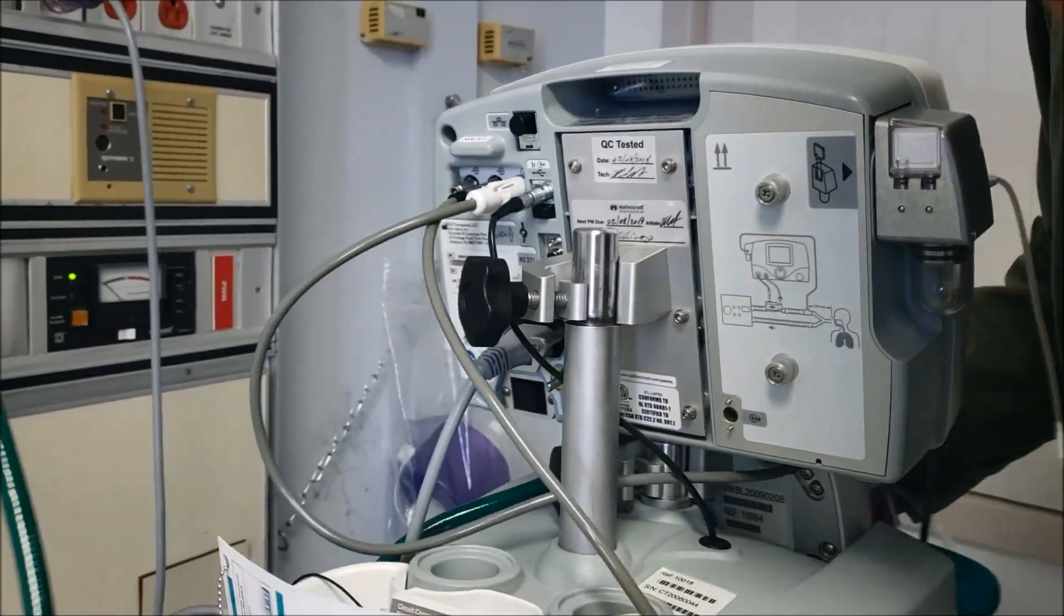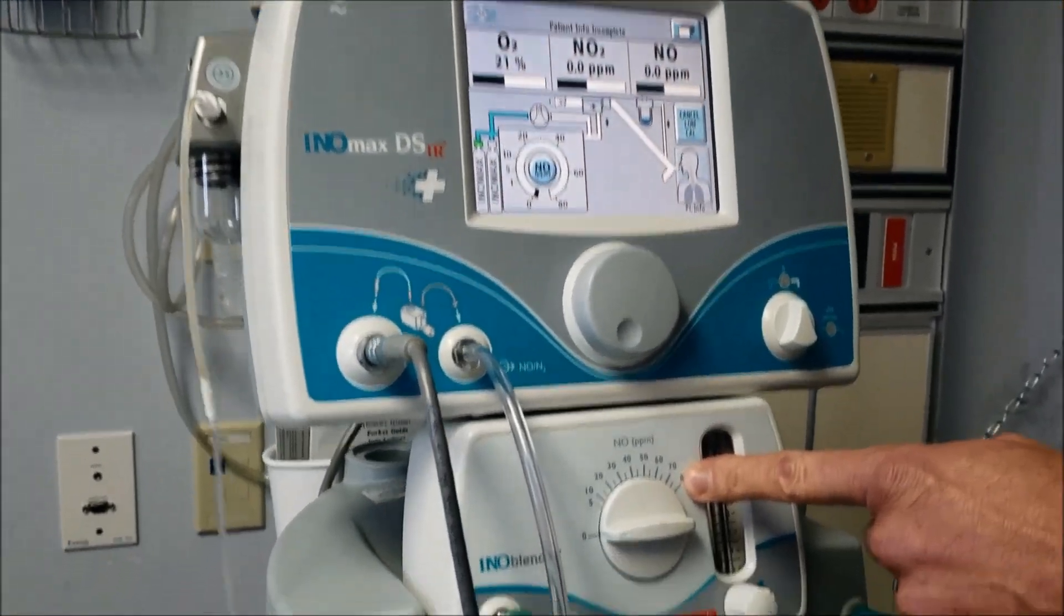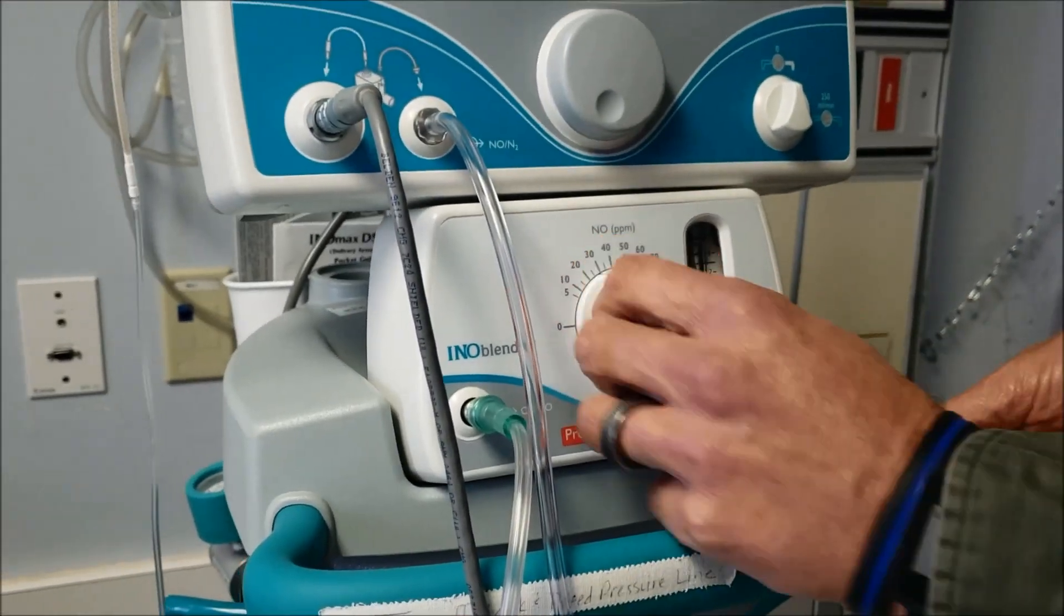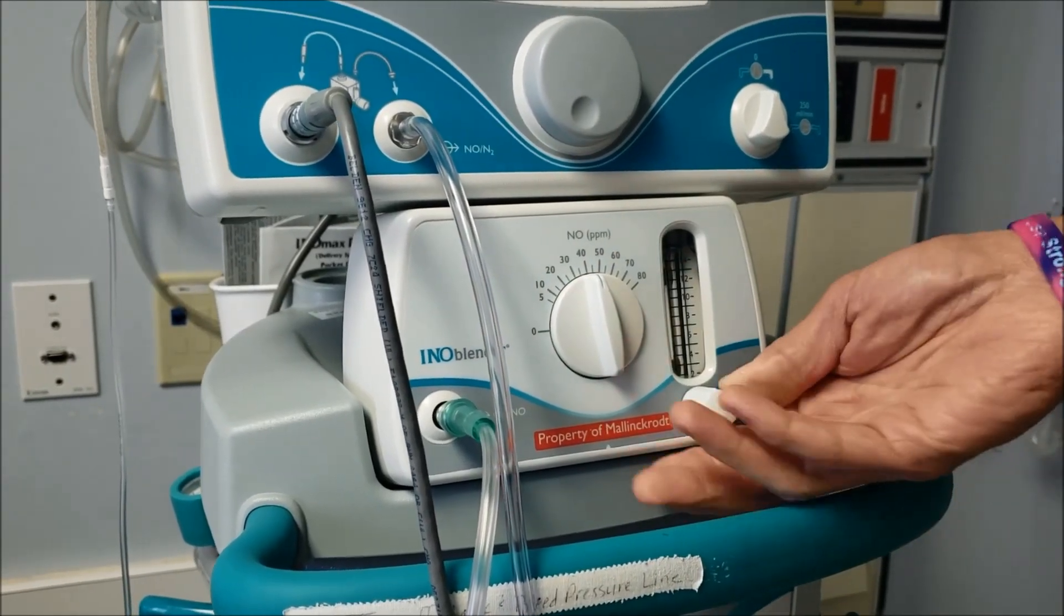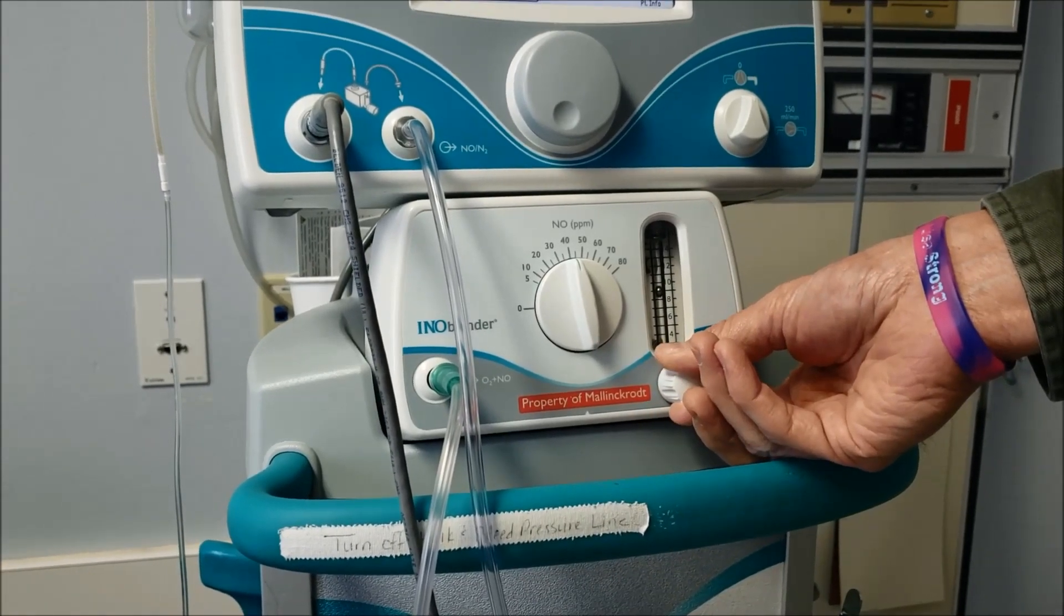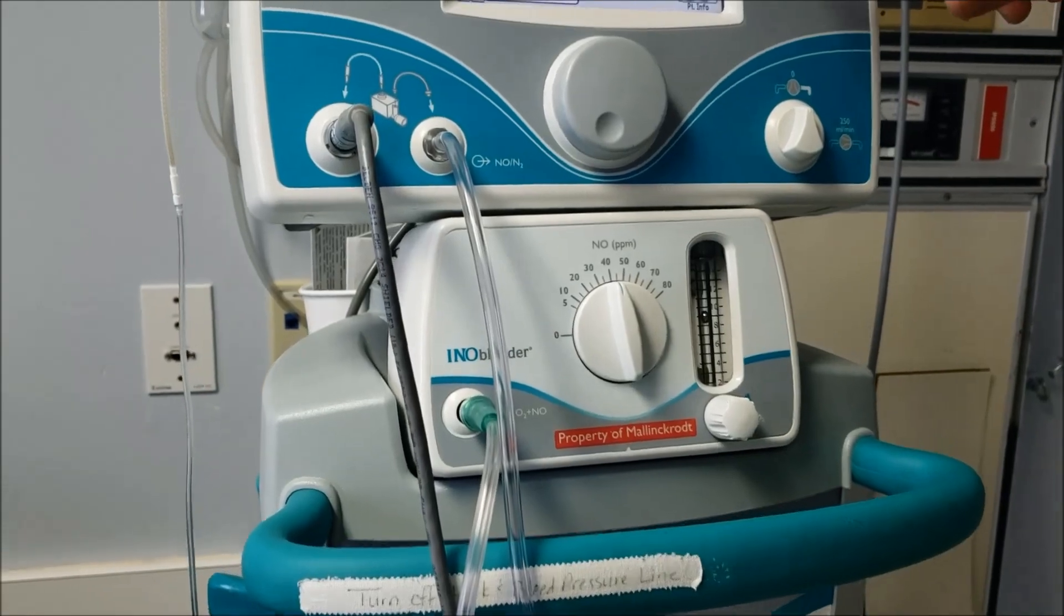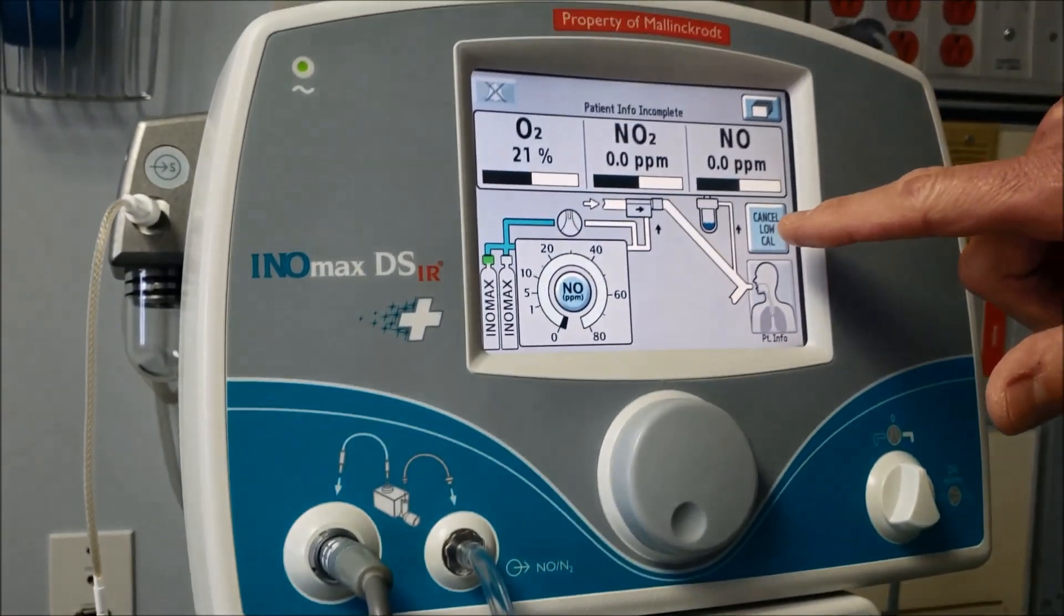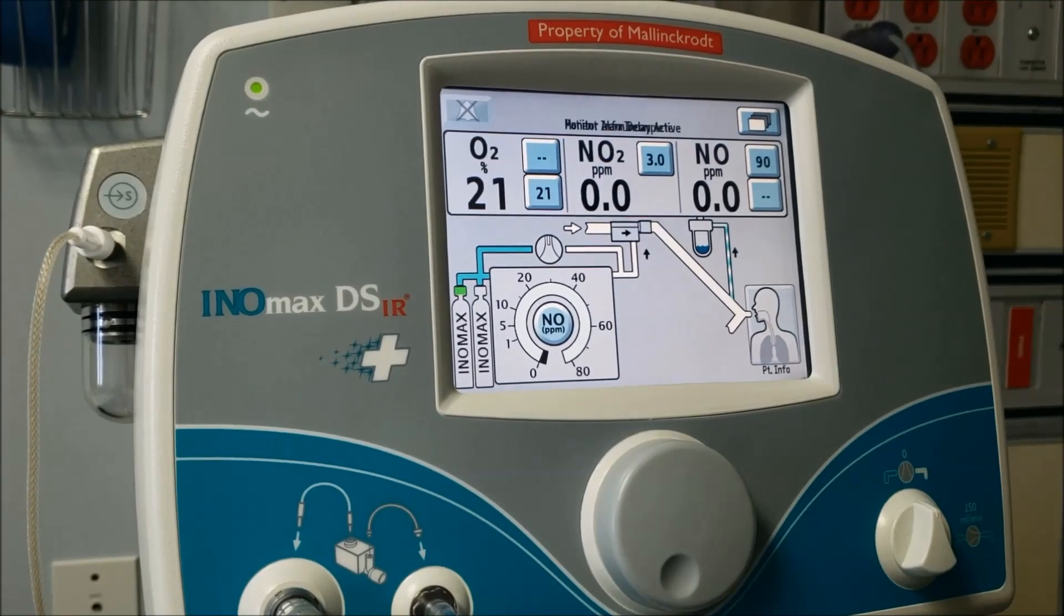If we spin the machine back around, we're going to set our nitric level here. And we want to start at 40 parts per million for a right heart study. So we're going to turn that on. We turn our flow on to about 10 liters per minute. And we're going to see that we're going to start getting some nitric readings here on our instrument panel.